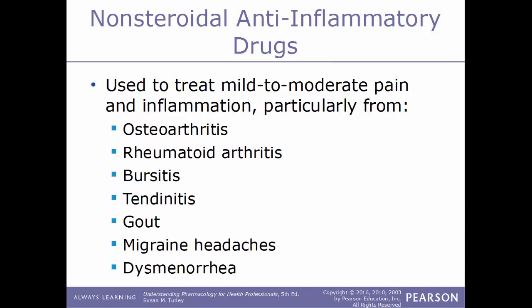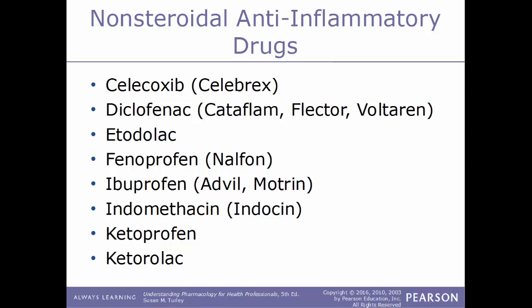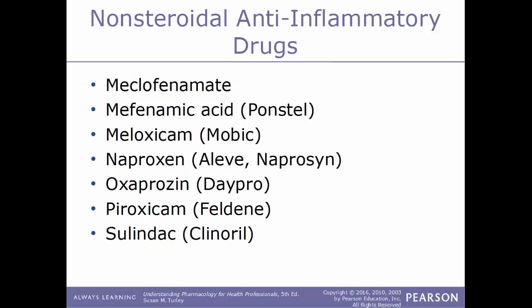Conditions that NSAIDs are taken for include osteoarthritis, rheumatoid arthritis, bursitis, tendonitis, gout, migraine headaches, and dysmenorrhea. Some examples of NSAIDs: celecoxib sold under the trade name Celebrex; diclofenac sold under Flector, Voltaren, or Cataflam; etodolac; fenoprofen sold under Nalfon; ibuprofen sold under Advil and Motrin; indomethacin sold under Indocin; ketoprofen; ketorolac; meclofenamate; mefenamic acid sold under Ponstel; meloxicam sold under Mobic; naproxen also known as Aleve or Naprosyn; oxaprozin sold under Daypro; piroxicam also known as Feldene; and sulindac also known as Clinoril.